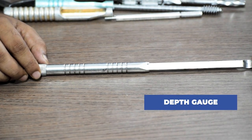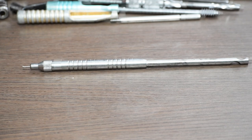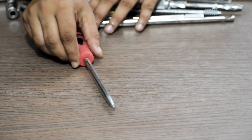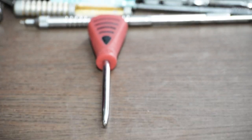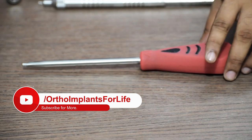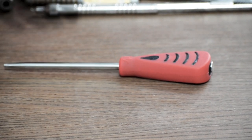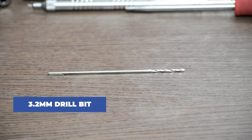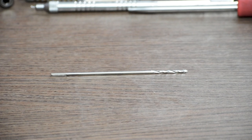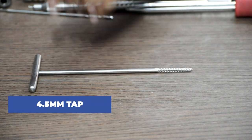This is a 4.5mm solid screwdriver, 150mm length. This is a 3.2mm drill bit, generally used for 4.5mm cortical screw. And lastly, this is 4.5mm tap.